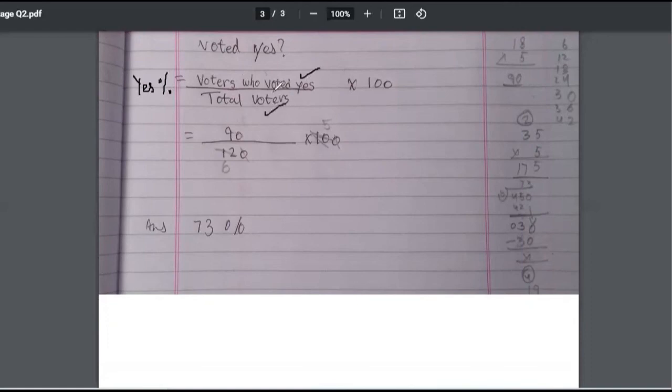So percentage of voters who said yes. Yes, very good. I'm just writing for now yes percentage. So voters voted yes upon total voters. 90. Again, I'm just doing it for my sake. 90 upon 120 into 100. So zero and zero got cancelled. 2, 6, 2, 5, 5, 5.